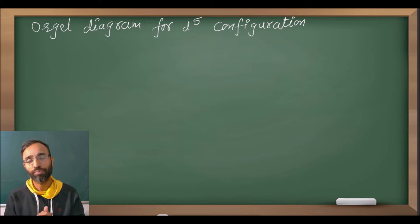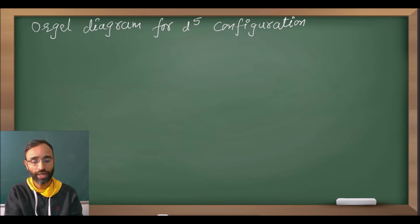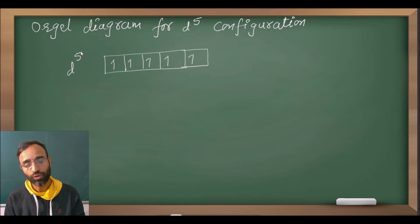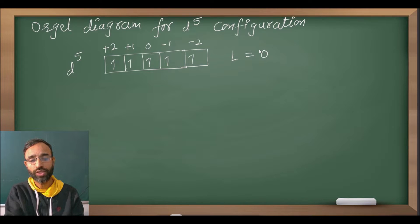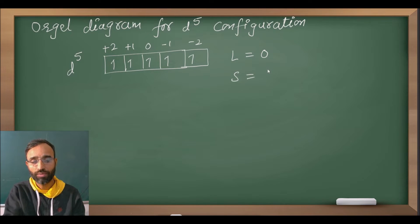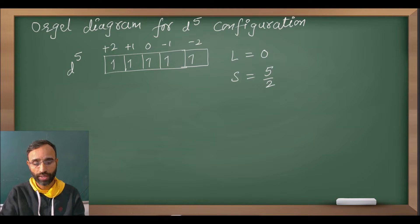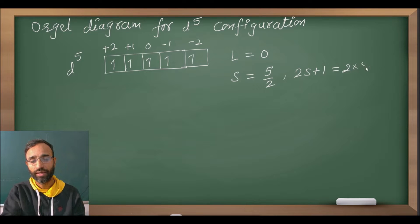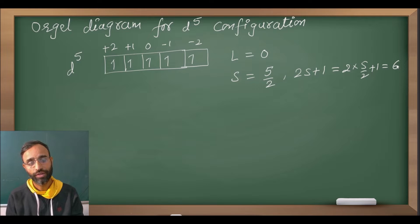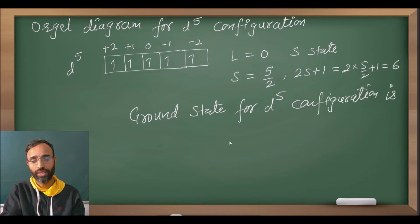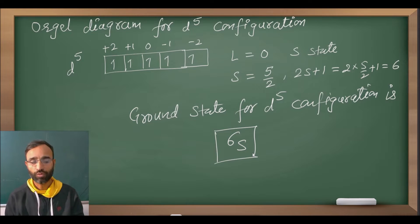D5 configuration is special in its own sense. In D5, if we talk about the ground state, there are five unpaired electrons with parallel spin. So its L value comes out to be 0 and S value comes out to be 5/2 because there are five unpaired electrons. So 2S+1, that is spin multiplicity, comes out to be 6. L=0 means S state, so the ground state for D5 configuration is ⁶S.